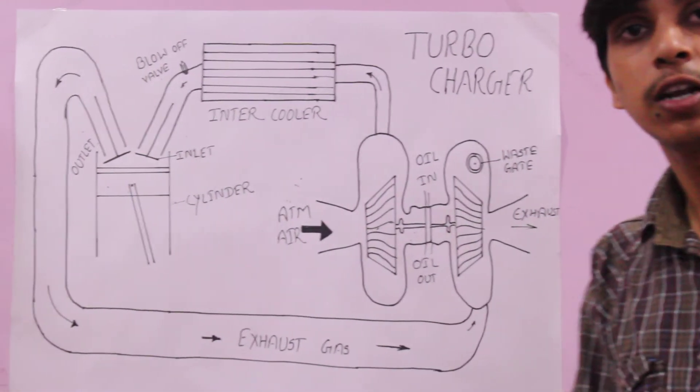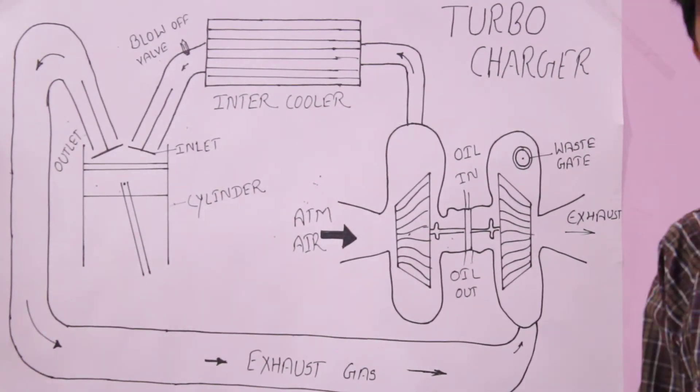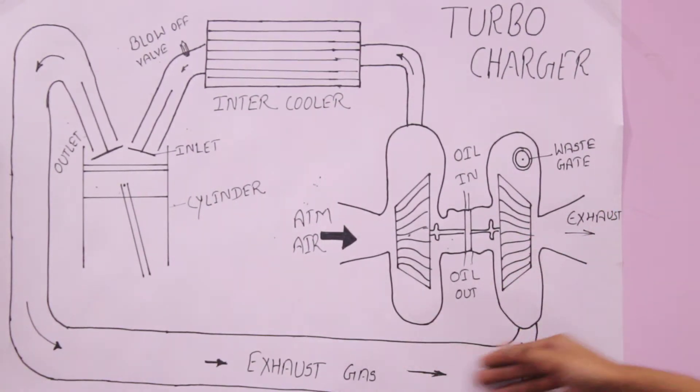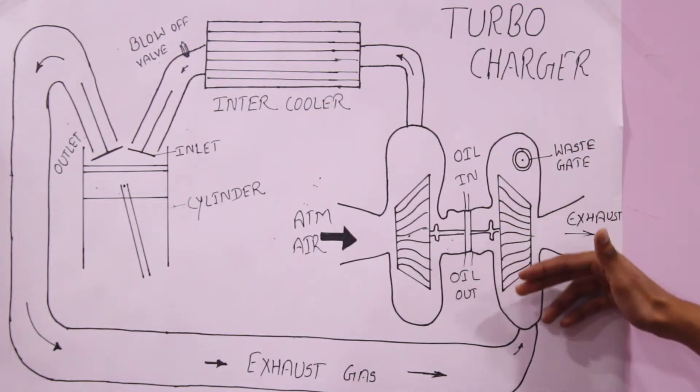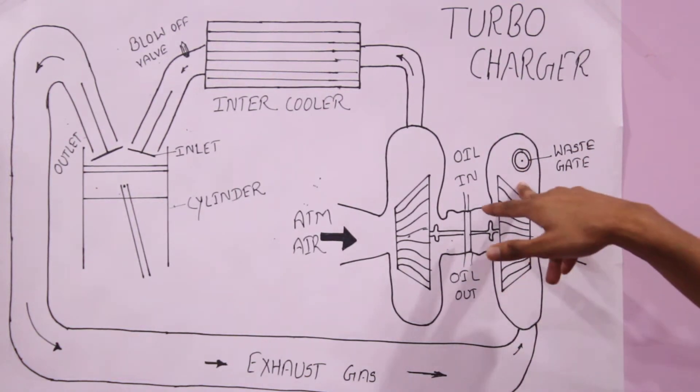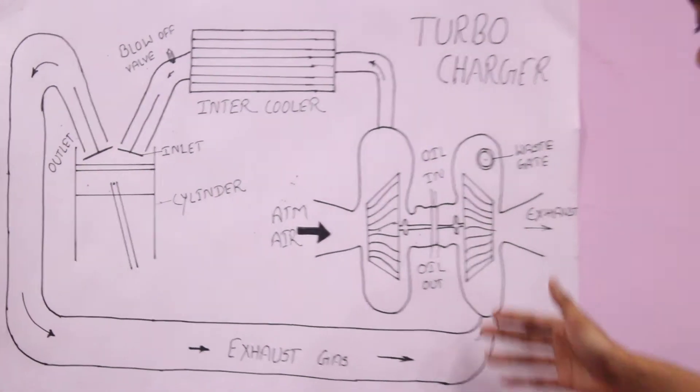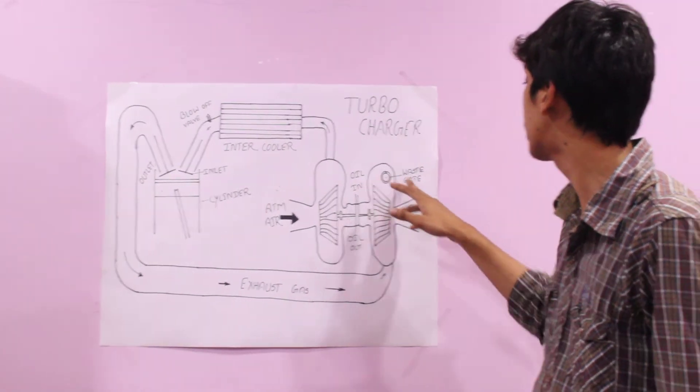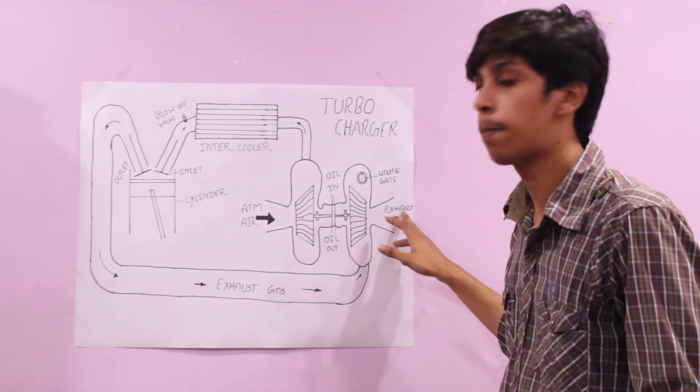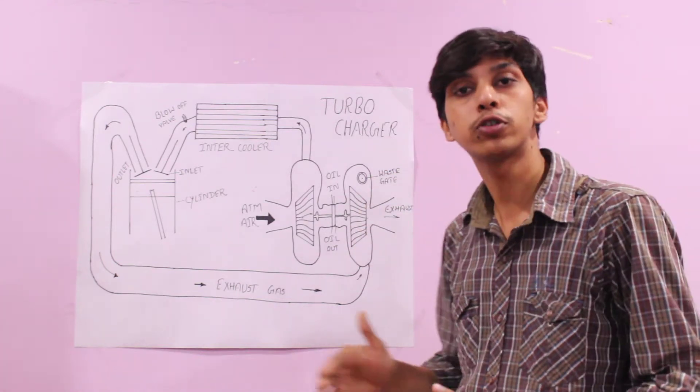The wastegate is generally used for high boost control in the cylinder. When a high amount of exhaust gas is present in the turbine chamber, then at that time the wastegate opens. Some amount of the exhaust gas releases from the wastegate into the exhaust pipe. With the help of the wastegate, high boost is controlled.